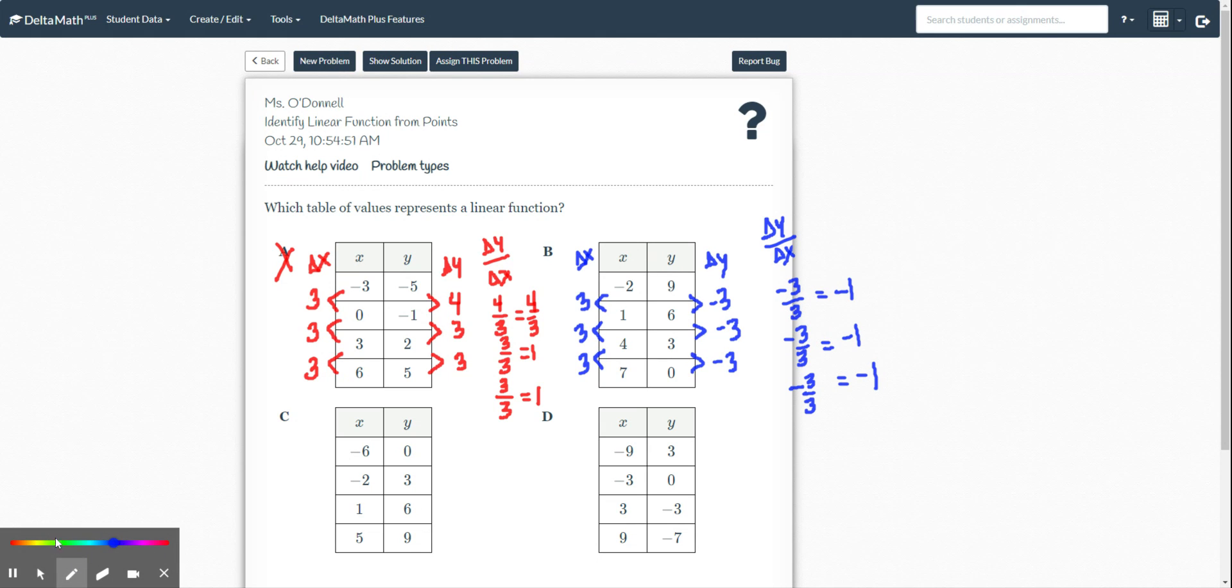All right, let's take a look at C. Let's see here. Same thing. I'm going to do my carets. Let's see if my pen will catch up. All right, 5 minus 1. So I'm going to do my change in my x's, my change in my y's, and then I'll compare them. So 5 minus 1 is 4. 1 minus negative 2 is 3. Negative 2 minus negative 6 is 4. All right, let's see here. 9 minus 6 is 3. 6 minus 3 is 3. 3 minus 0 is 3. Okay.